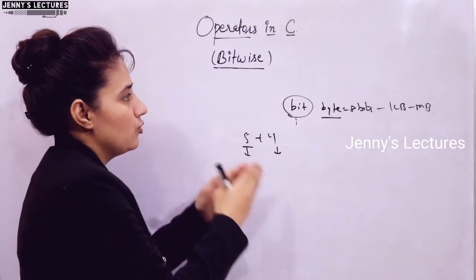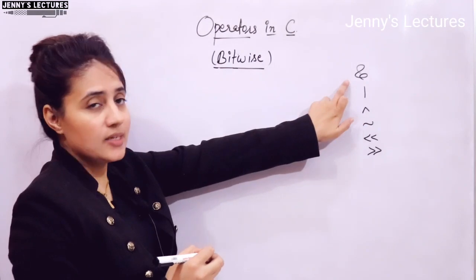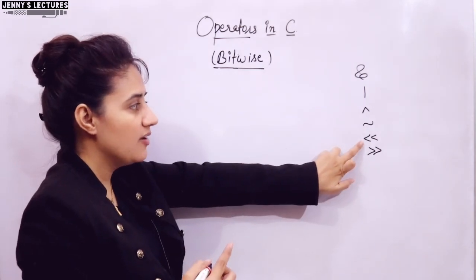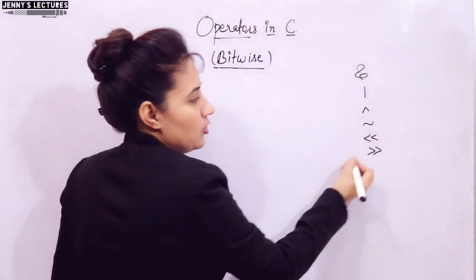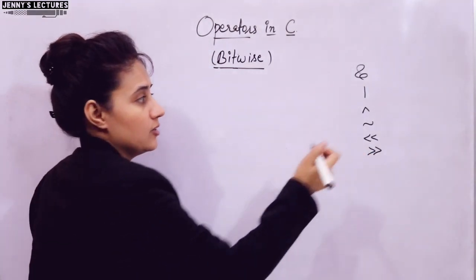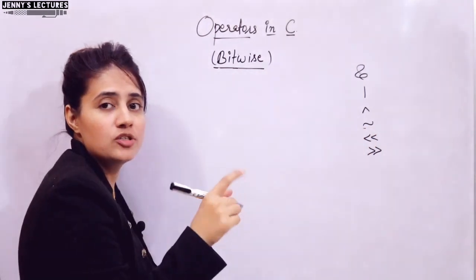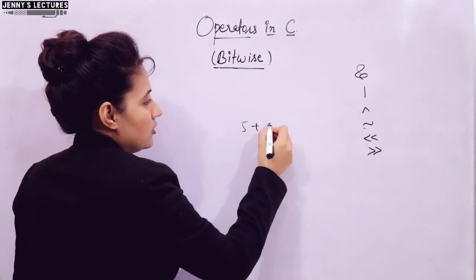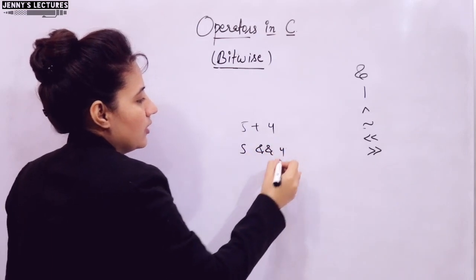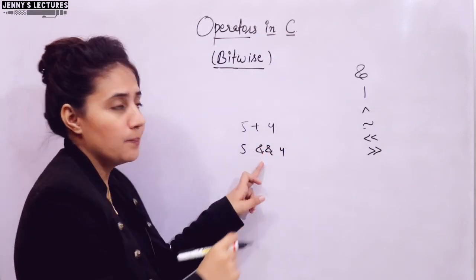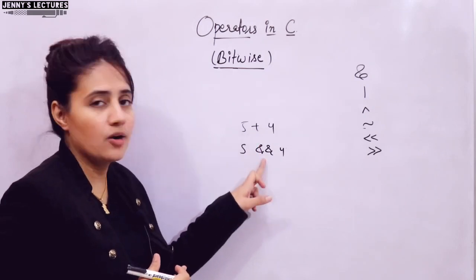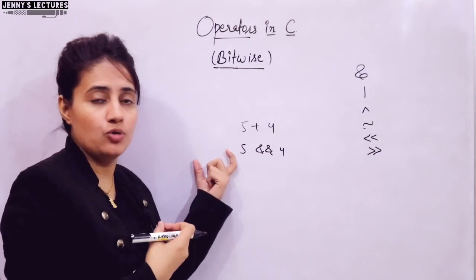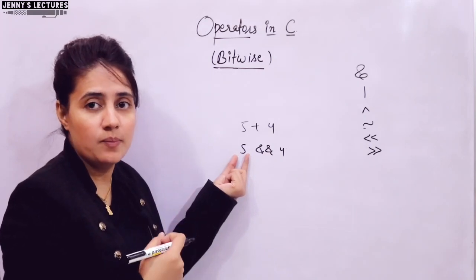The types of bitwise operators are: bitwise AND, bitwise OR, bitwise XOR, bitwise NOT (also called one's complement), left shift, and right shift. Bitwise AND, OR, XOR, left shift, and right shift are binary operators requiring two operands. Bitwise NOT is a unary operator requiring only one operand. When you write an expression like 5 AND 4, the minimum input requirement for these operators is one byte — 8 bits.